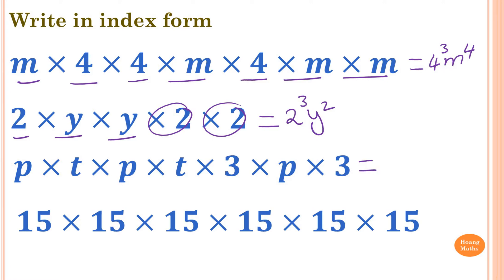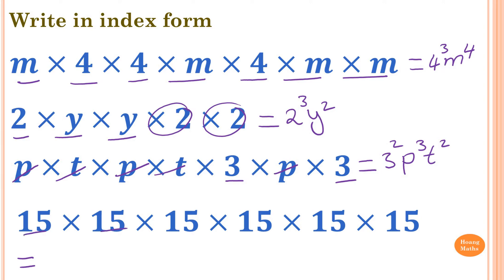For the second last one: 3 times 3, which is 3 squared. And P — counting 1, 2, 3 — so P to the power of 3. And T times T, which is T squared. Last one: 15 times 15 times 15 times 15 times 15 times 15 — counting 1, 2, 3, 4, 5, 6 — so 15 to the power of 6.